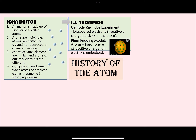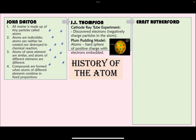The plum pudding model is not very similar to the modern model of the atom. After Thomson, Rutherford came next, and Rutherford is very important for the Regents exam — there is essentially a 100% likelihood you'll get at least one question about him. Rutherford conducted the gold foil experiment, in which he took an alpha particle source and bombarded alpha particles onto a gold foil.